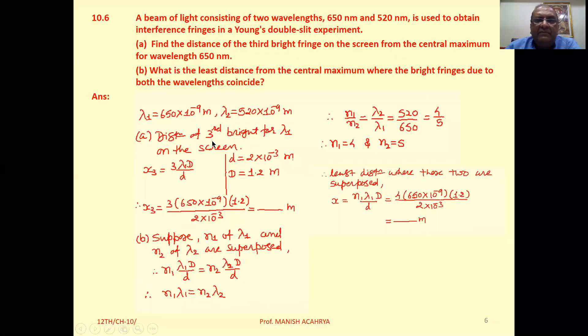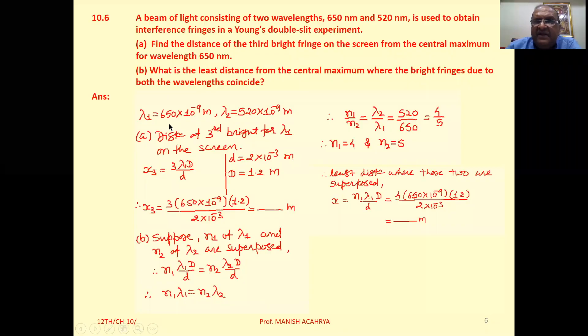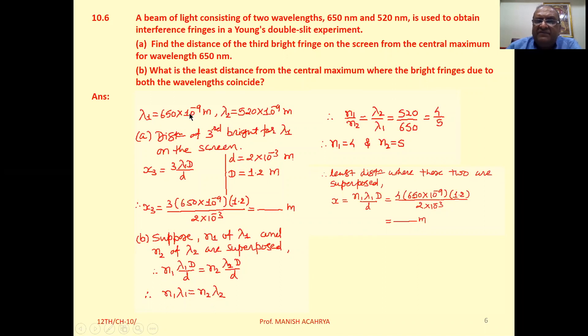Now see, lambda 1 that is 650 nanometer, so that is 650 into 10 raise to minus 9 meter. Lambda 2 that is 520 nanometer, so that is 520 into 10 raise to minus 9 meter.